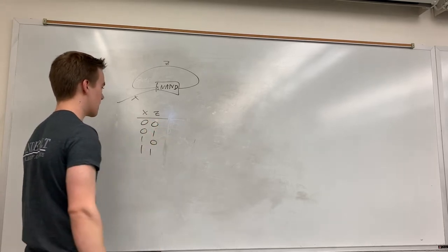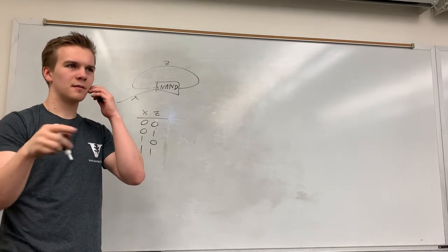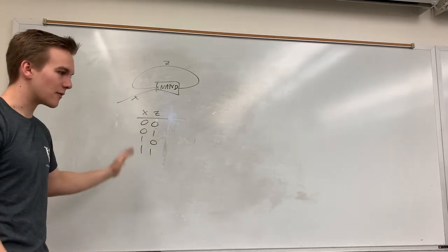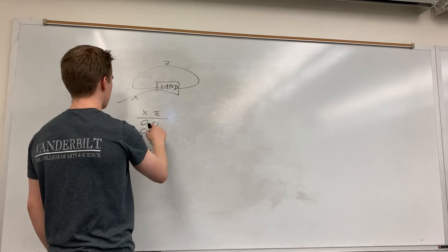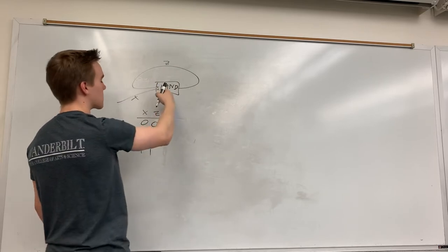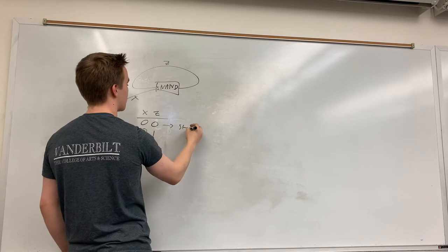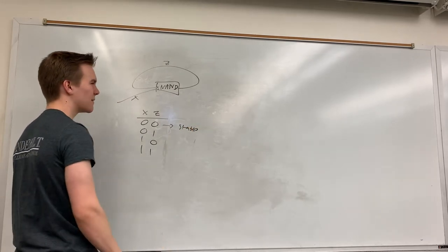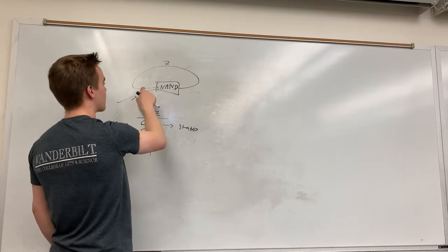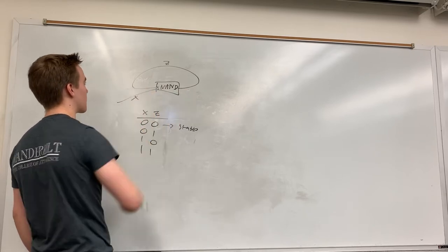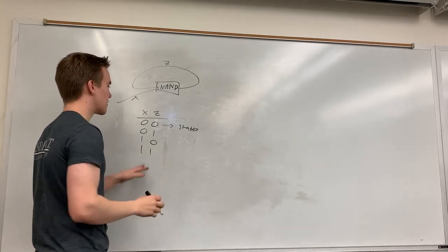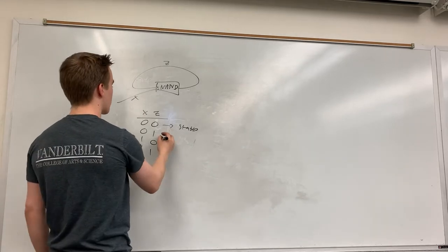Stable here just means that one of the values is not going to be changing over time — it stays put when you set those inputs. If I put in zero and zero into a NAND, the output is one, so Z will be set to one — that's different from what we put in, so it's not stable. It looks like it's not stable when the output is different from the input Z.